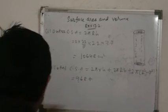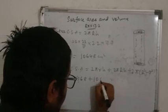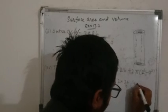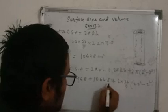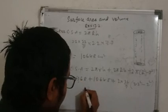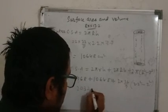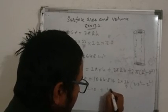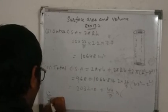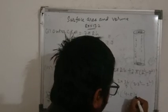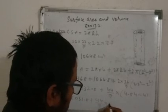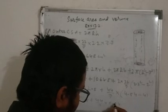First answer was 968, plus second answer is 1064.8. Adding these: 968 + 1064.8 = 2032.8. Now calculate 2 × (22/7) × (R² - r²) = (44/7) × (2.2² - 2²) = (44/7) × (4.84 - 4) = (44/7) × 0.84. Cut 7 into 0.84 gives 0.12, so 44 × 0.12 = 5.28.